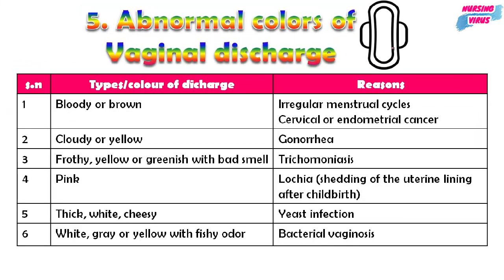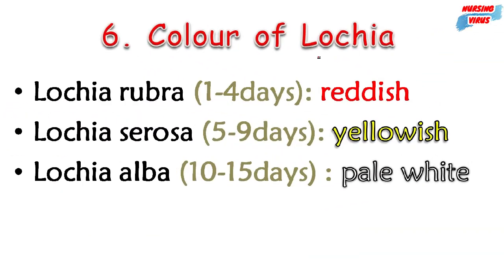The fifth topic is the abnormal color of vaginal discharge. Bloody or brown color discharge indicates an irregular menstrual cycle or cervical/endometrial cancer. Cloudy or yellow color indicates gonorrheal infection. Frothy, yellow or greenish discharge with bad smell indicates trichomoniasis infection. Pink color indicates lochia — shedding of the uterine lining after childbirth, seen in the postnatal period. Thick or white cheesy discharge indicates yeast infection. White, gray, or yellow with fishy odor indicates bacterial vaginosis.